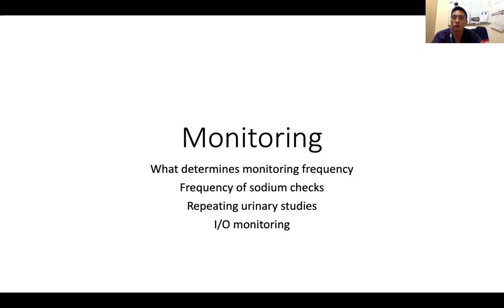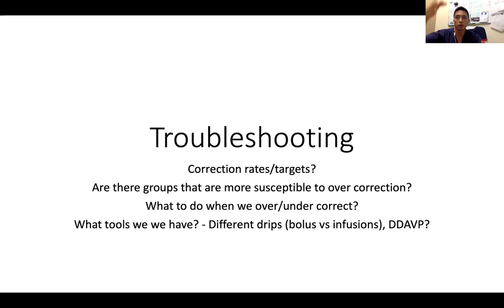The faster rate of rise occurs in specific situations — for example, in hypocortisolism when you give steroids, you can see urine output increase very rapidly and sodium rise much more quickly. This is when you need to call for help. If urine output rises to more than 100 ml per hour, that is a very telling sign that sodium will rise rapidly. At that point, escalate and consider measures such as infusing isotonic or hypotonic saline or giving DDAVP to dampen the rate of sodium rise.